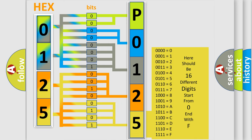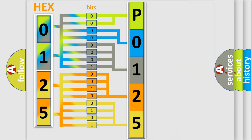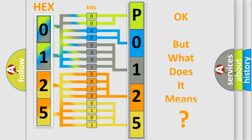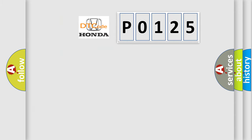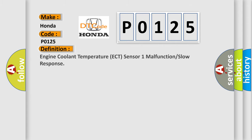We now know in what way the diagnostic tool translates the received information into a more comprehensible format. The number itself does not make sense to us if we cannot assign information about what it actually expresses. So, what does the diagnostic trouble code P0125 interpret specifically? For Honda car manufacturers, the basic definition is: Engine Coolant Temperature (ECT) sensor 1 malfunction or slow response.